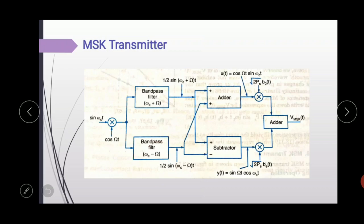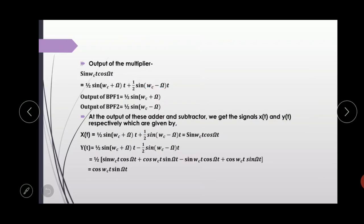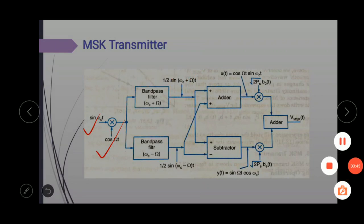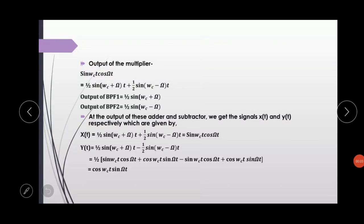Next is the MSK transmitter. The carrier signal, that is sine omega CT, is multiplied with the cos. This one is the notation of the orthogonal frequency. These two signals are multiplied in a balanced modulator. Then, the output of the first multiplier is the multiplication of these two signals. This one is the multiplication. Then, after applying the mathematical formula that is sine A into cos B, the multiplier output contains the sum frequency and difference frequency.